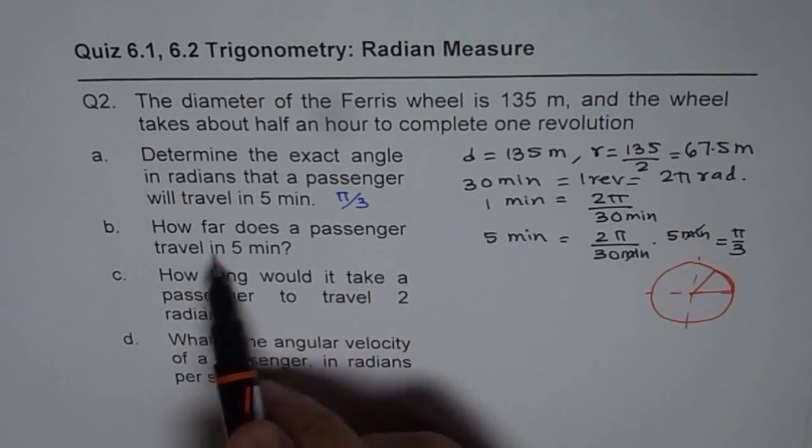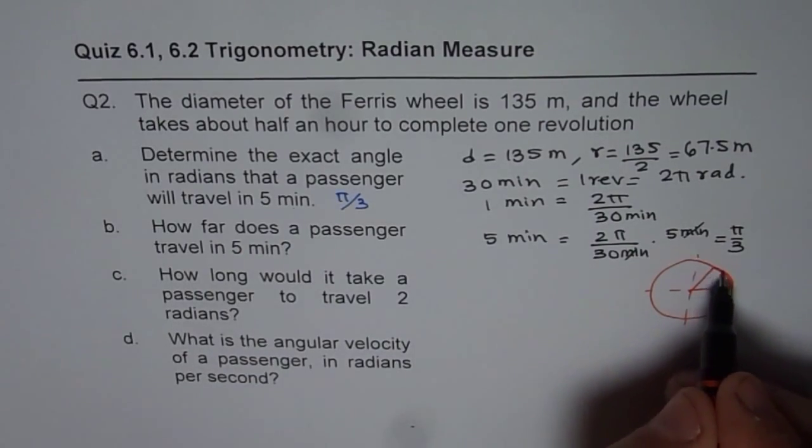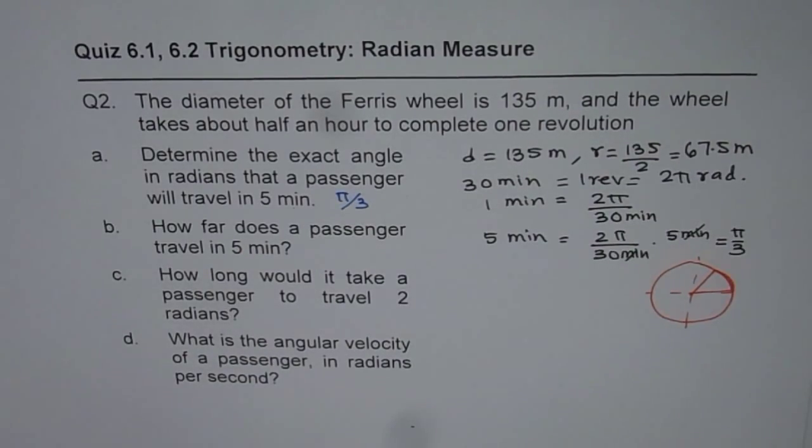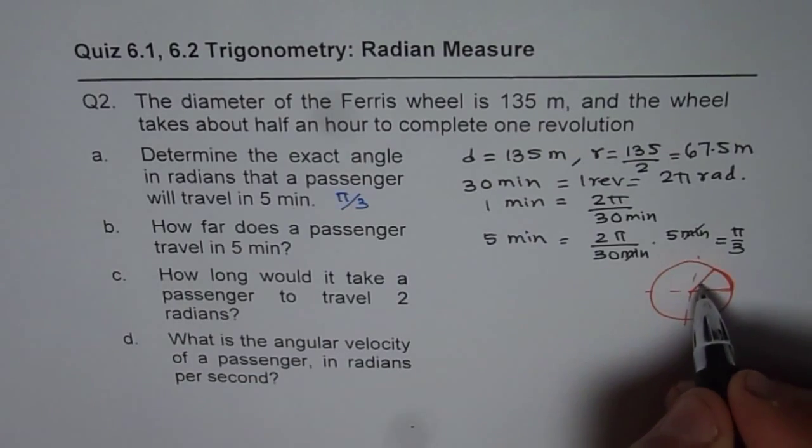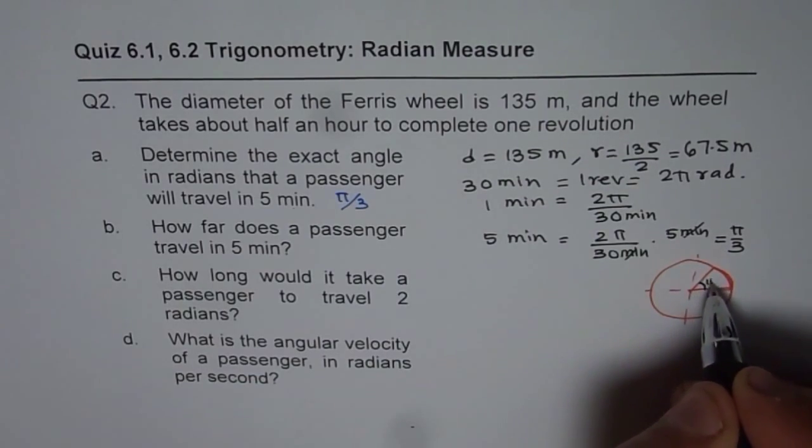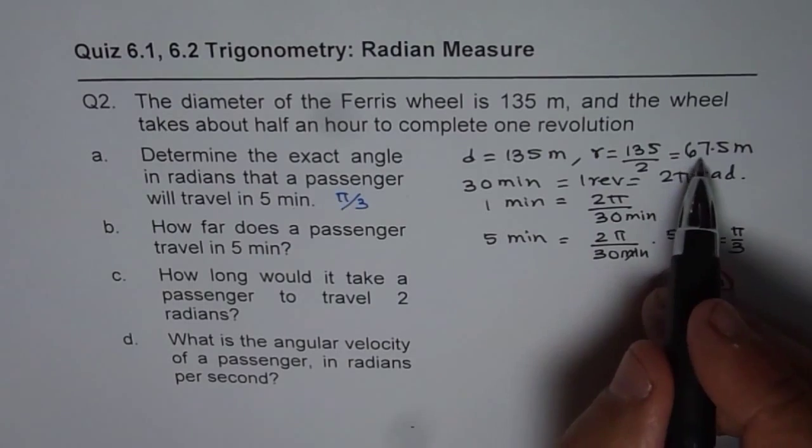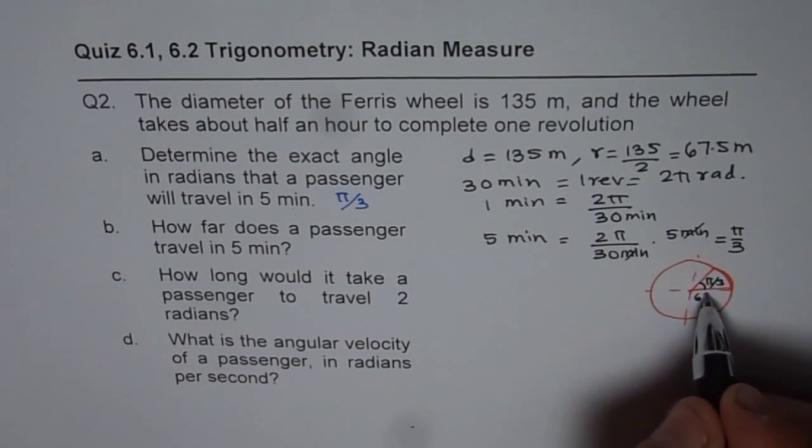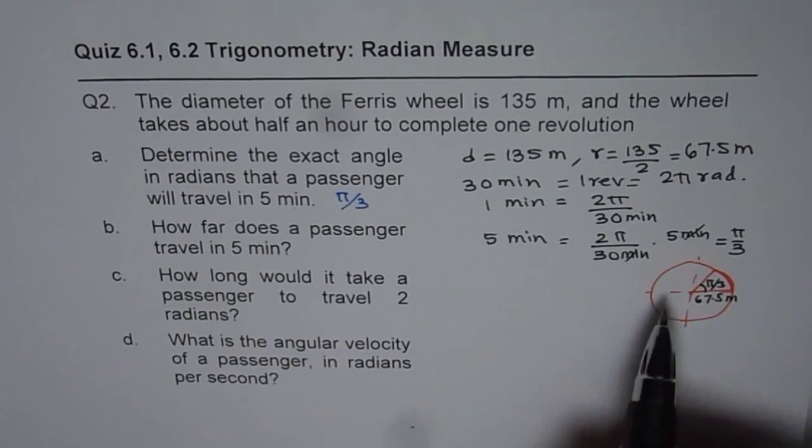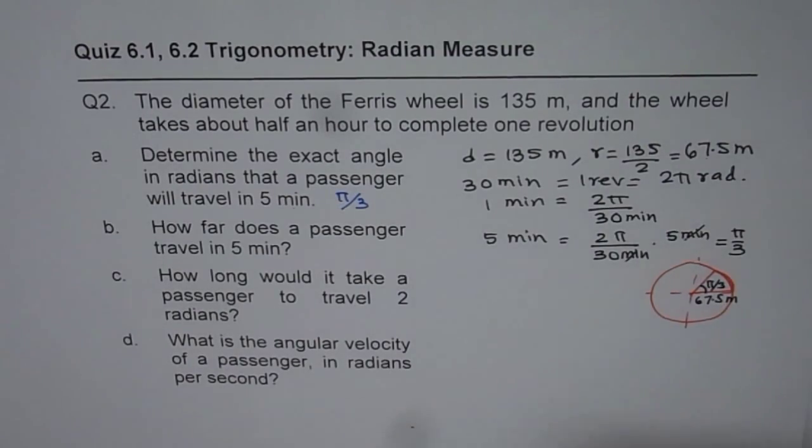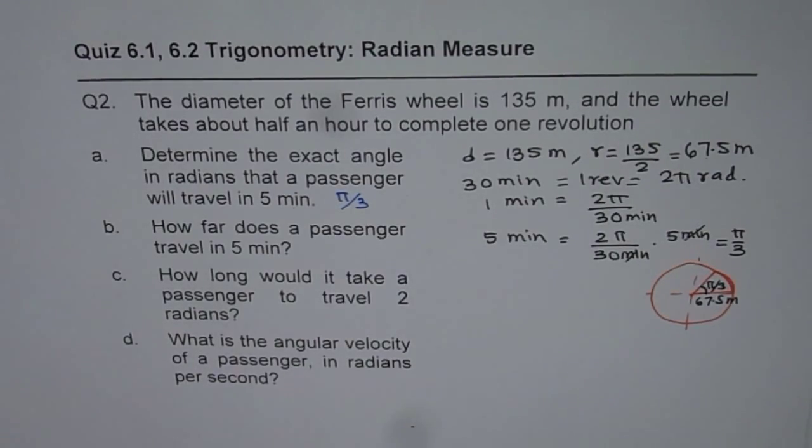When we say how far does a passenger travel in five minutes, that is the arc length which we need to find. We already know that the angle is π by 3 and the radius is 67.5 meters. So now you can find arc length A, which is R times θ.